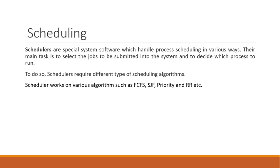Let's quickly revise what we covered in the last session. Schedulers are special system software that handle process scheduling in various ways. Their main task is to select the job to be submitted into the system and to decide which process to run. In scheduling, they select jobs one by one to enter the processing part. That selection depends on the scheduling algorithm being followed. FCFS means First Come First Served — whichever process arrives first, the scheduler picks and runs it to completion.